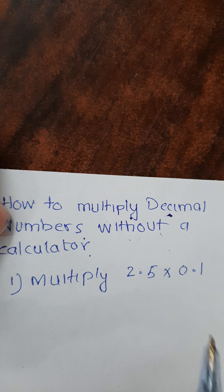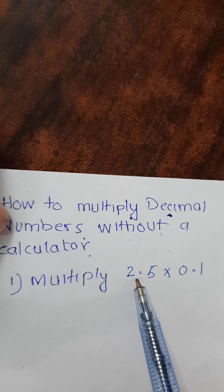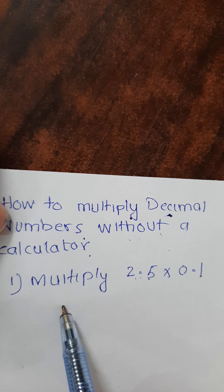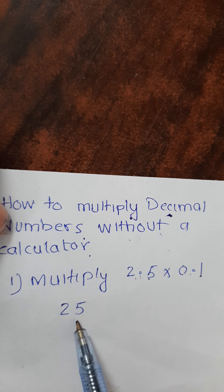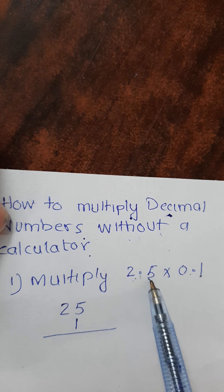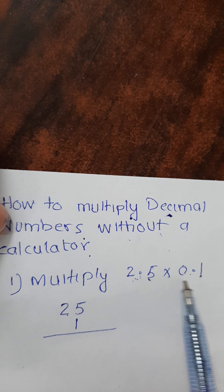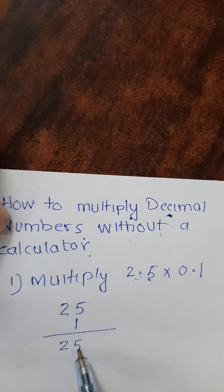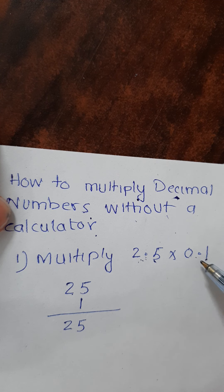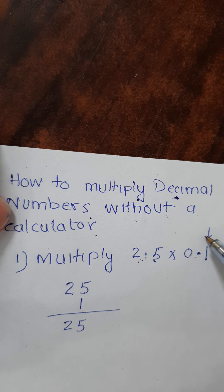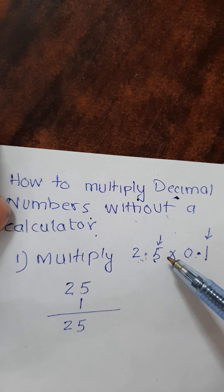The process is: multiply 25 and 1, meaning initially we are not considering the decimals in the multiplication. We are just multiplying the numbers — 25 from here and 1 from here — which gives you 25. Now you have to insert the decimal, because this is not your final answer. To insert the decimal, count the number of digits after the decimal point.